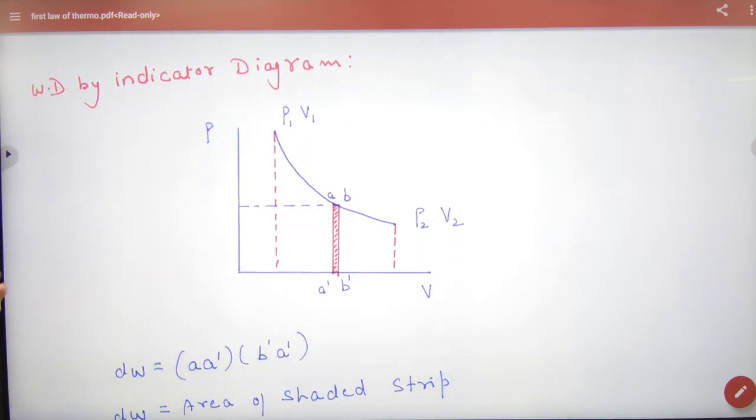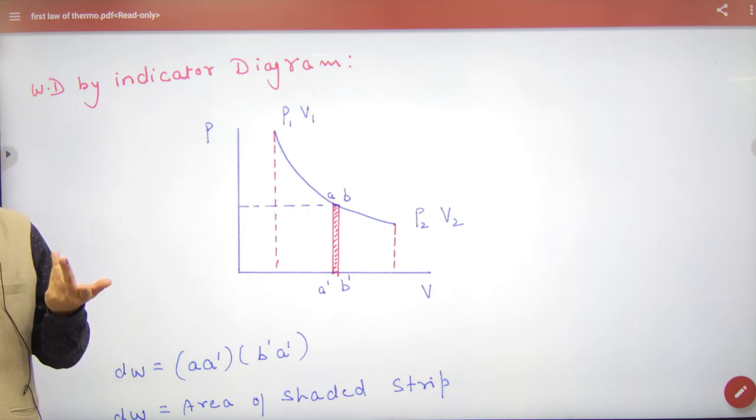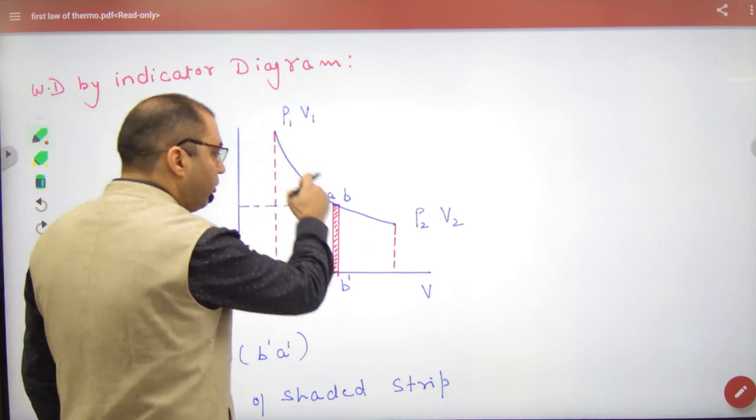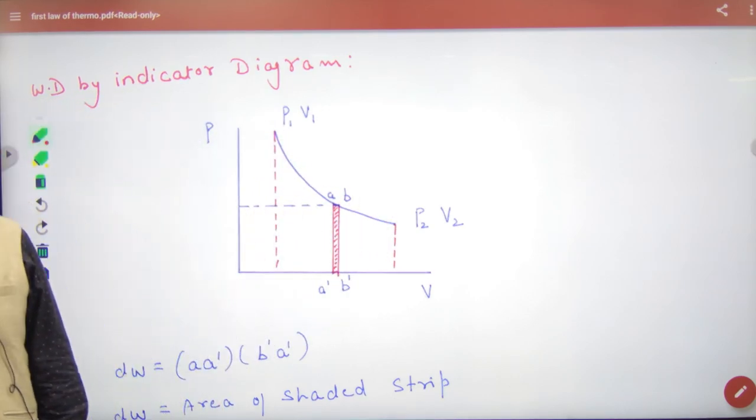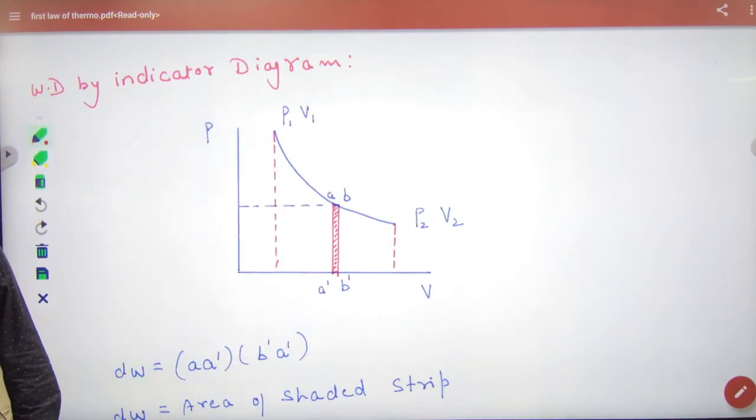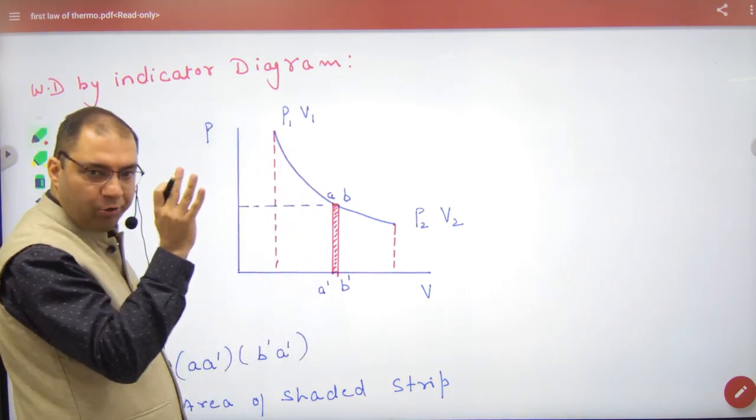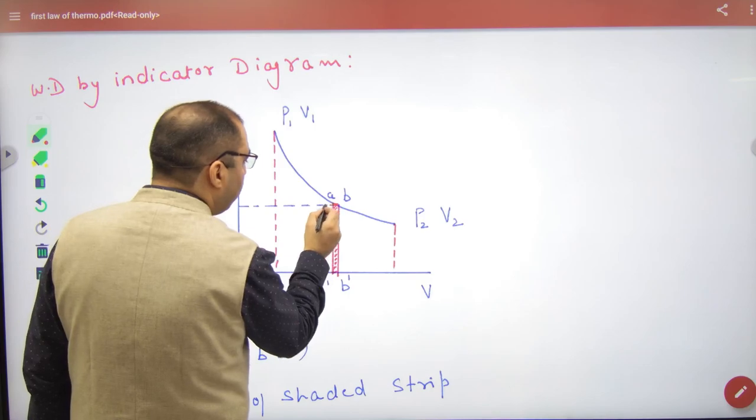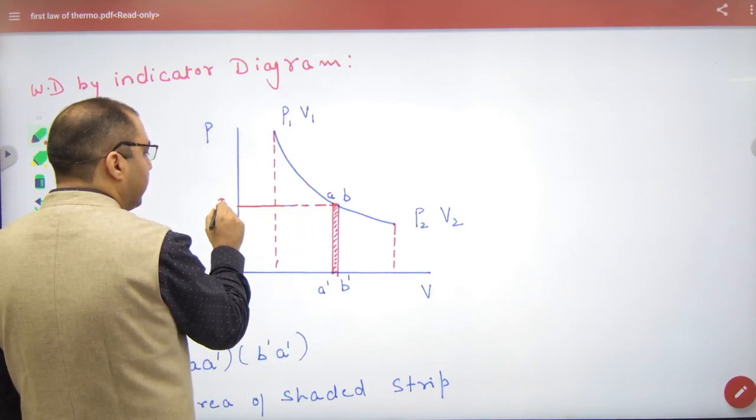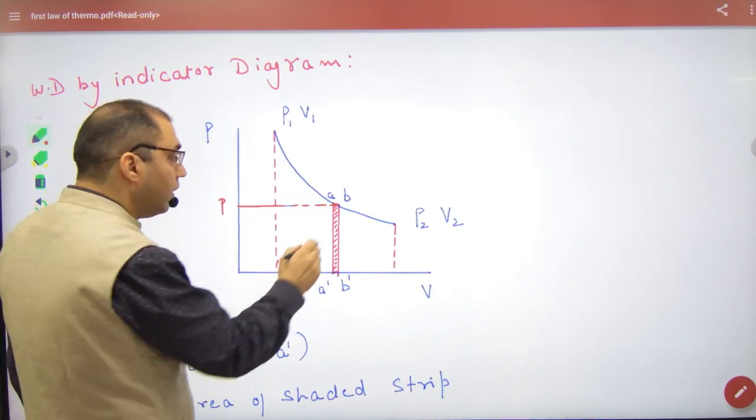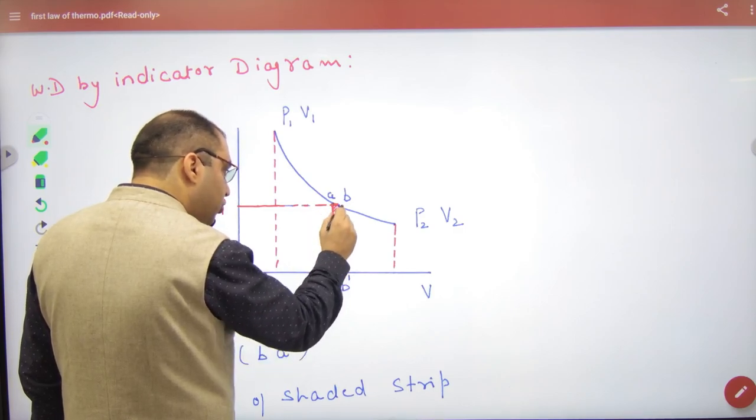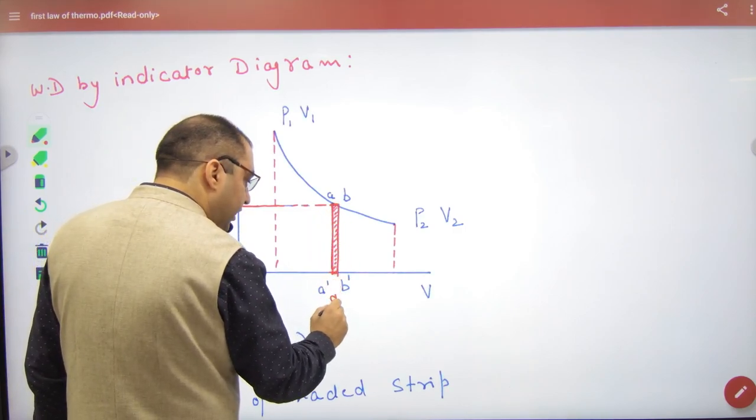Work done by indicator diagram, area under indicator diagram work done. Proof, proof, proof in the work done. P1 V1 volume pressure P2 V2 V2, V2 almost straight so pressure same and this pressure change in volume here dv.